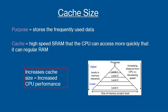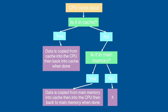It's also important to be aware that there are three main levels of cache, with level 1 being the quickest but having the lowest capacity. When data is required, the CPU looks at cache memory first. If not in cache, it looks in main memory. Data is then copied from main memory into cache and then into the CPU.